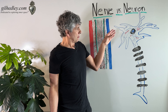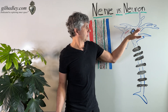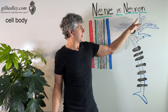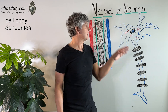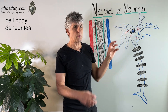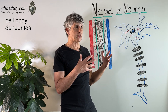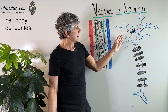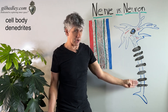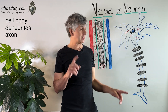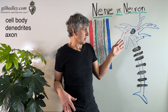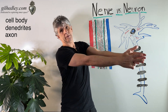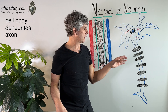So the neuron consists of its cell body and its dendrites — looks a lot like these leaves, actually. The dendrites are sort of reaching out to communicate with other nerve cells. And then the neuron has its axon, which is the long, skinny part. It can go from here to your fingertips, so it can go quite a long ways.